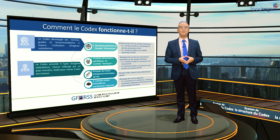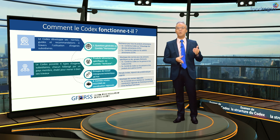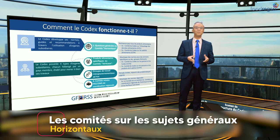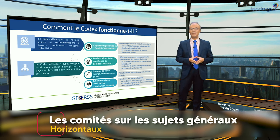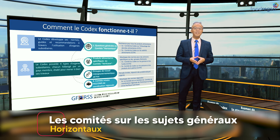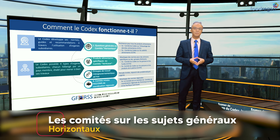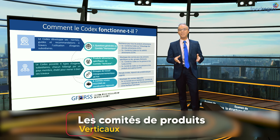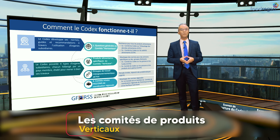Examinons ces quatre types de comités. Le premier type, ce sont les comités sur les sujets généraux ou les questions générales, également appelés les comités horizontaux. Ce sont les comités qui établissent des normes et des lignes directrices applicables à tous les aliments sans distinction. Le deuxième type, ce sont les comités de produits, aussi appelés les comités verticaux, qui préparent des normes pour les produits alimentaires particuliers.